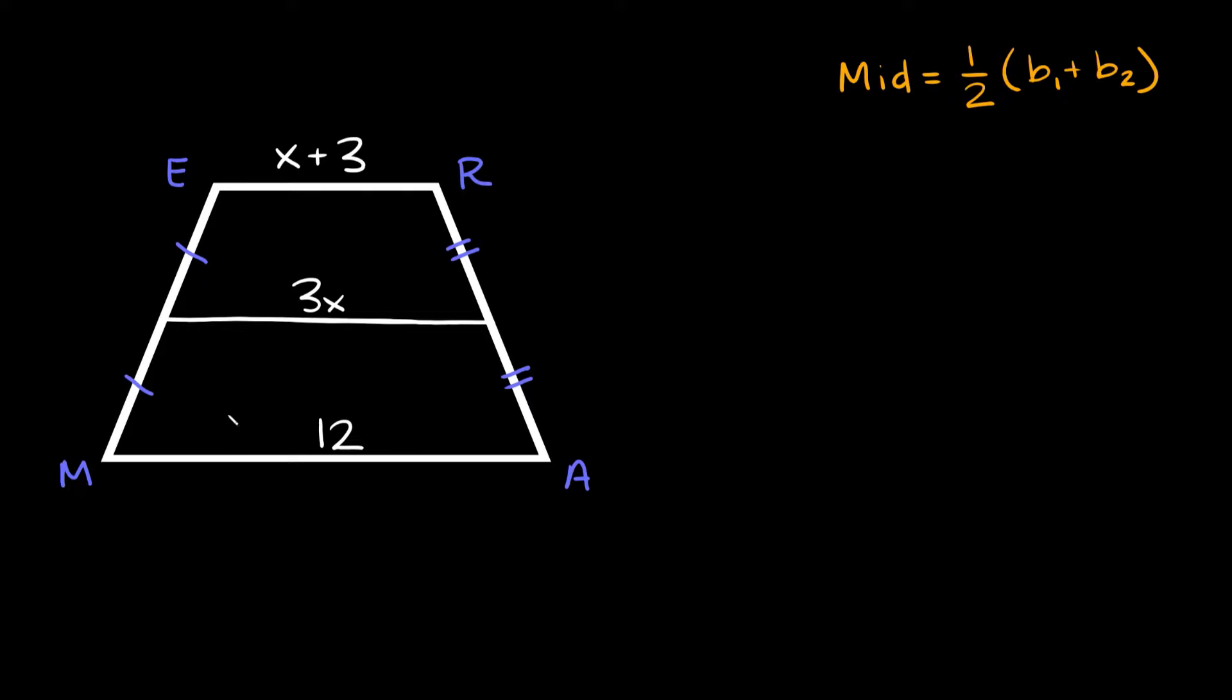So here we have our trapezoid and the mid-segment is right here in the middle between the two bases. This is the top base x plus 3, mid-segment's 3x, and this bottom base is 12. So the trapezoid mid-segment theorem just says that the mid-segment is equal to 1 half times the sum of the bases.